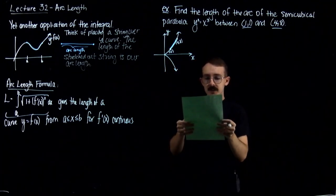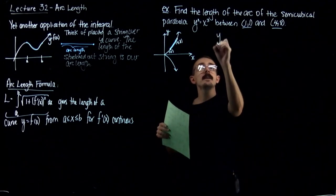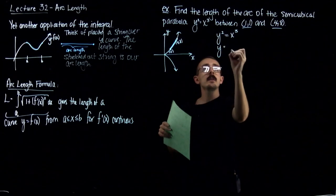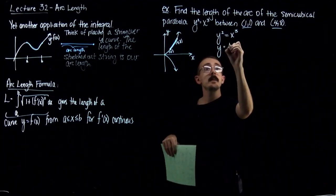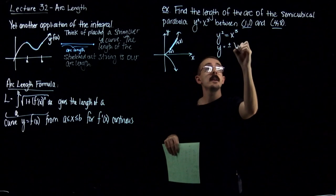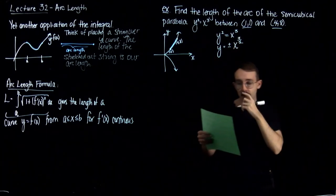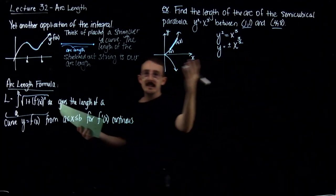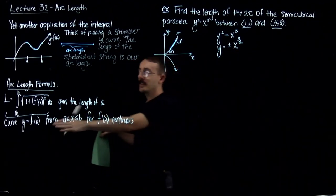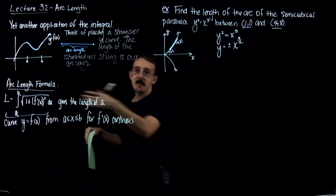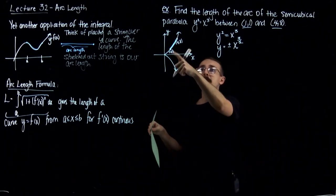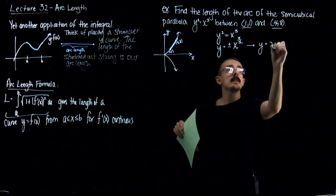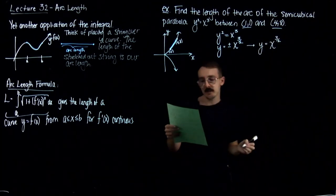I'm going to put my function in terms of x. If y squared is x cubed, then taking the square root of both sides gives plus or minus x to the 3/2. However, I'm only concerned with the upper portion — and even if I plugged the negative portion into the formula, I'd square it and get a positive anyway. So the one I want to focus on is y equals the positive x to the 3/2 power.